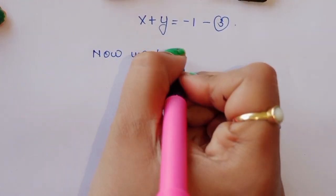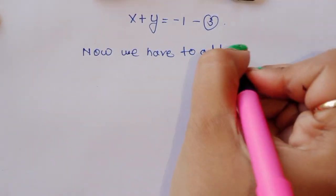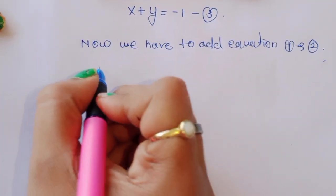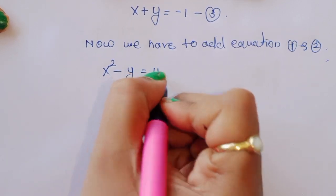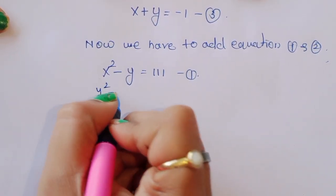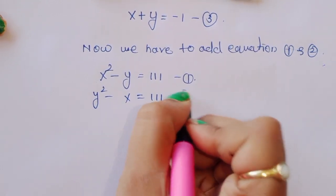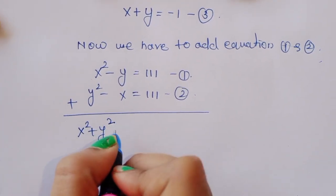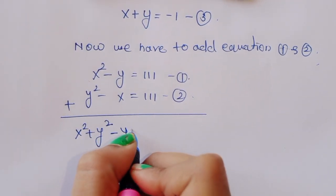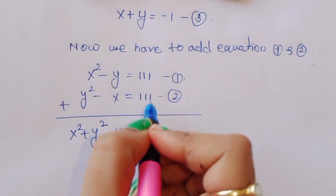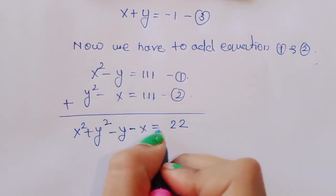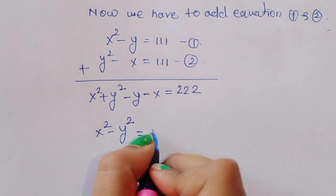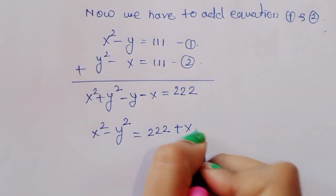Now we add equation 1 and equation 2 together. Equation 1: x squared minus y equals 111. Equation 2: y squared minus x equals 111. Adding them gives x squared plus y squared minus y minus x equals 222. So we can write x squared plus y squared equals 222 plus x plus y. This is equation 4.